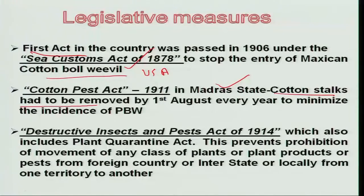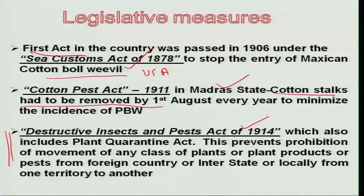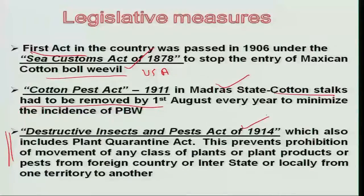Under the Cotton Pest Act, cotton stalks had to be removed by the first of August, mainly to eliminate the incidence of pink boll worm, because the carry-over of larvae used to occur in the cotton stalks. Then, during the British regime, the first major act was passed — the Destructive Insects and Pests Act of 1914 — which includes the plant quarantine act. This prevents the movement of plant products or plant by-products containing insects from one foreign country to another, from one state to another, and across territories.